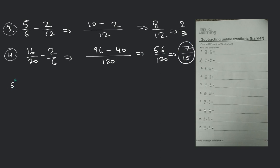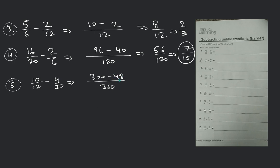Understood? Number 5 question: 10 by 12 minus 4 by 13. You just take the LCM — 12 into 13 = 156, but working it out: 360. 30 into 10 = 300, minus 12 into 4 = 48. 300 minus 48 = 252, divided by 360. If you simplify, it will be 126 divided by 180.